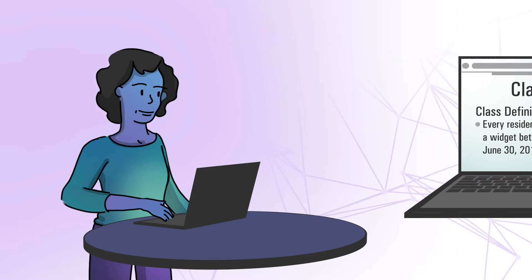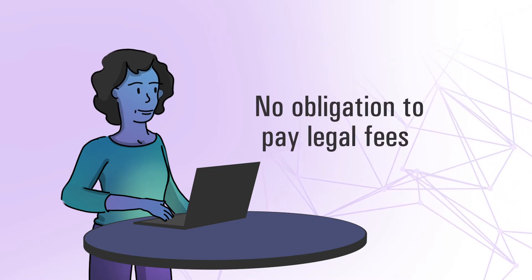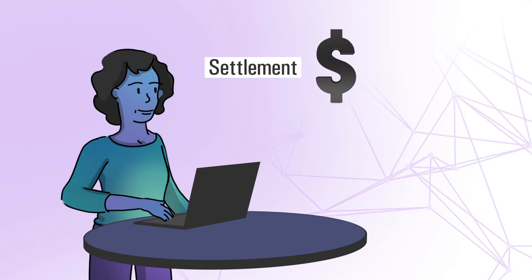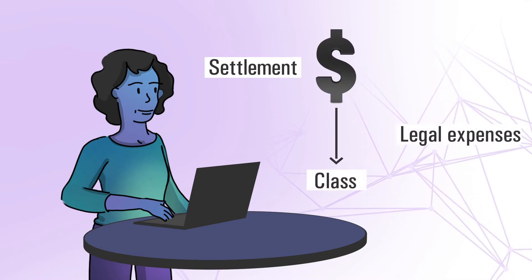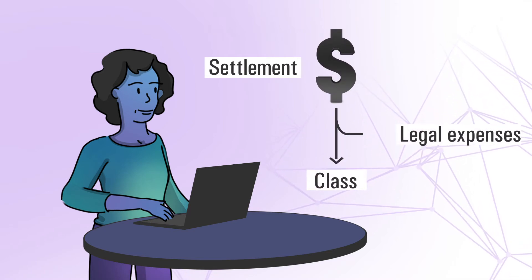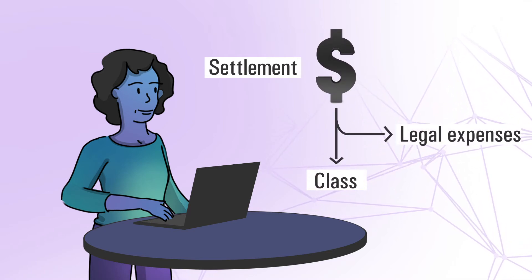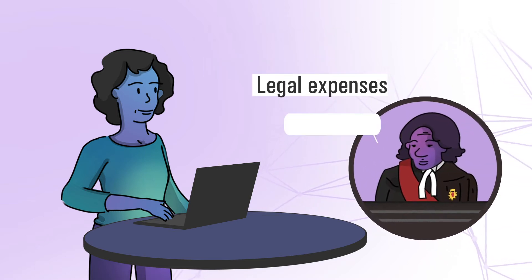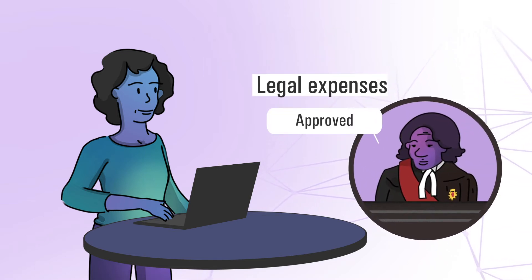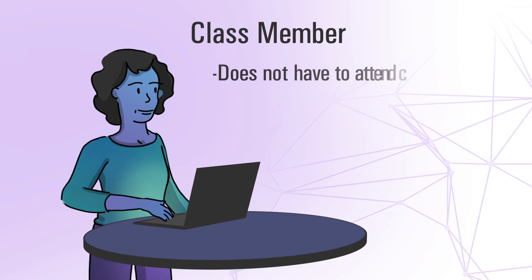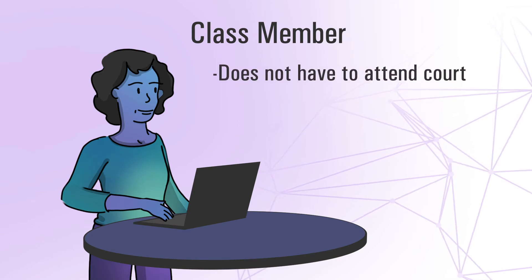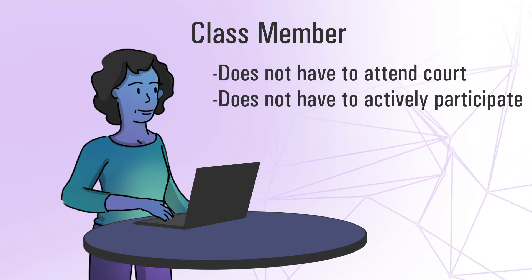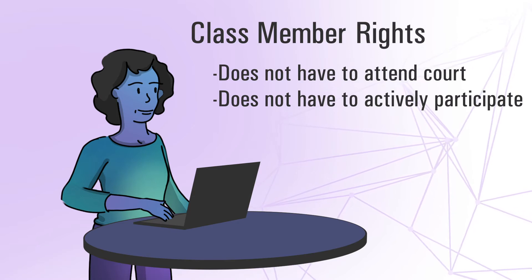Anita has no obligation to pay legal fees. If the case settles or is successful at trial, legal expenses are usually paid from the amounts recovered for the class, and any such payment must first be approved by the court. As a class member, Anita does not have to attend court or actively participate in the case, but she still has rights.